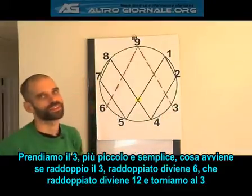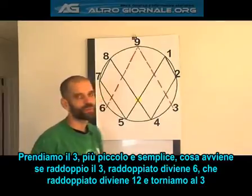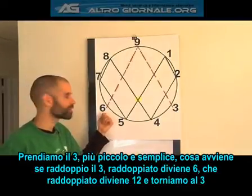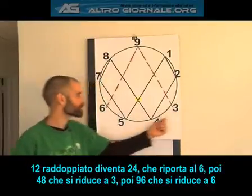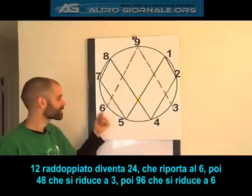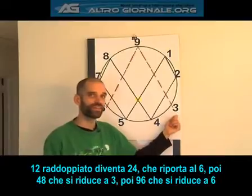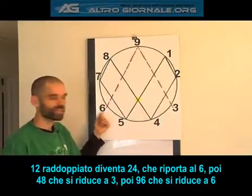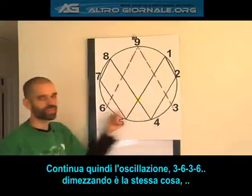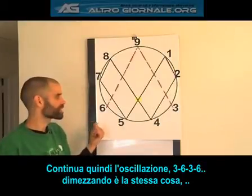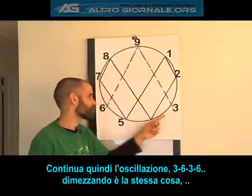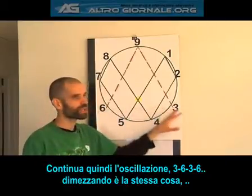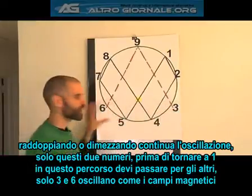Let's take three first since it's the smallest. What happens when I double three? Three doubled becomes six. Six doubled becomes twelve, and two plus one is three. Twelve doubled becomes twenty-four — two plus four is six. Twenty-four doubled is forty-eight — four plus eight is twelve, and two plus one is three. Forty-eight doubled is ninety-six, which comes back to six. So no matter how far you double these, you're oscillating: three, six, three, six. Halving is the same — half of six is three, half of three is 1.5, which is six. Half of thirty is fifteen, which is six. No matter which way you do it, halving or doubling, three and six are oscillating back and forth.